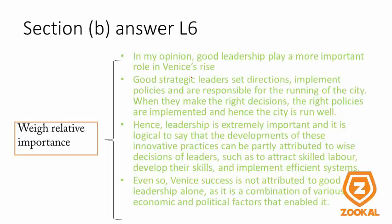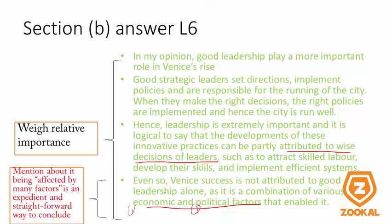L6 is about evaluation — weighing the relative importance. I have chosen good leadership because you can recollect a lot from chapter 2 on understanding governance. Leadership is extremely important, and it's logical to say that developments of innovative practices can be partly attributed to the wise decisions of leaders — so one factor is under the other, making it the main determinant. Even so, success is not attributed to good leadership alone; it's a combination of various economic and political factors, so you choose one economic and one political and say you need a multi-pronged approach. It's quite foolproof.